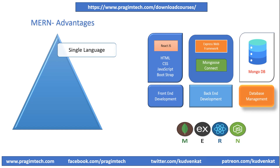There are several compelling reasons to choose the MERN stack for web development. With MERN, you use JavaScript throughout the entire stack — from the front-end React to the back-end Node.js. This eliminates the need to switch between different programming languages, leading to better code consistency and developer efficiency. MERN enables developers to build full-stack web applications using a consistent set of technologies, simplifying development and deployment by allowing developers to work seamlessly across the entire application stack.